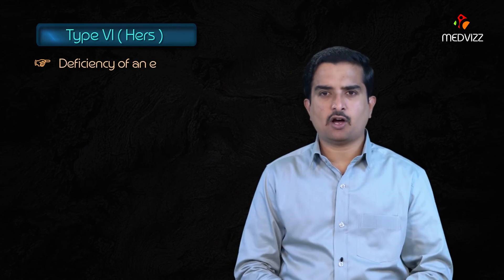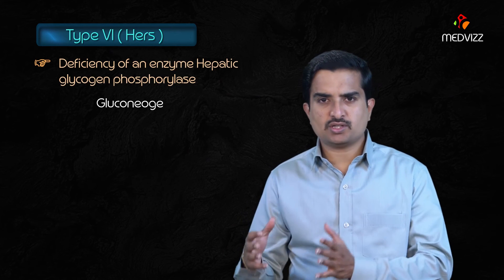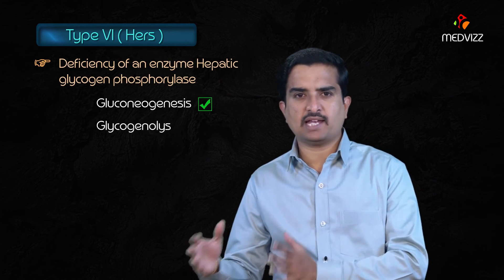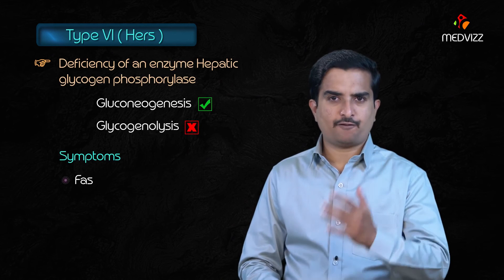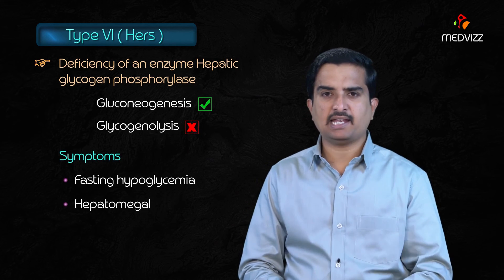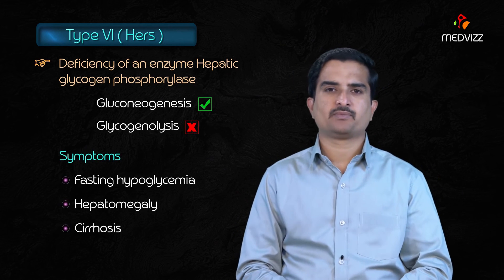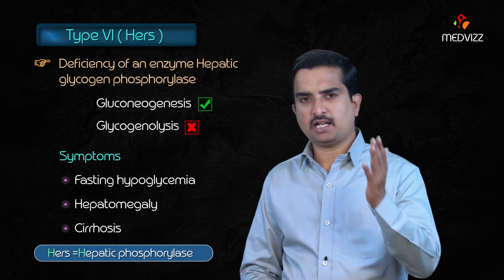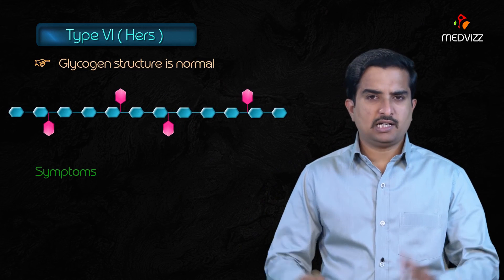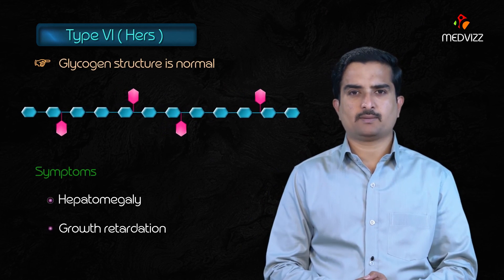Type 6, Hers' disease, involves a deficiency of hepatic glycogen phosphorylase. Gluconeogenesis is present but glycogenolysis is absent. There is fasting hypoglycemia but it is very mild in nature, and hepatomegaly is seen. In worst cases there will be cirrhosis. As with McArdle's (Type 5), glycogen structure is normal. It presents in early childhood with hepatomegaly and growth retardation.